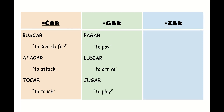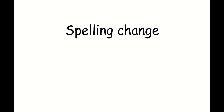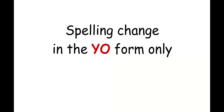Some verbs that end in -zar are abrazar, which means to hug or embrace; cruzar, which means to cross; and empezar, which means to begin or start. But this is only a spelling change — it has no effect on how you speak Spanish. And it only occurs under very specific circumstances: when you are conjugating a verb in the yo form.